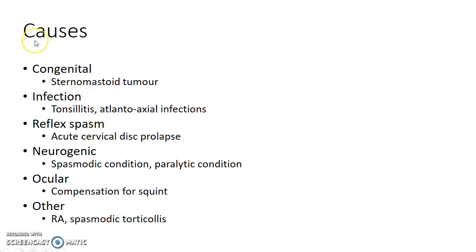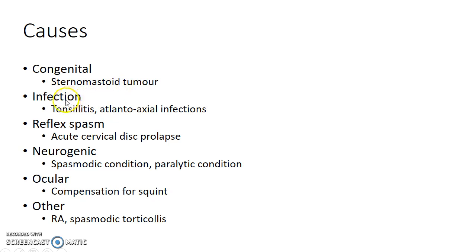Now let us see about the causes of Torticollis. Torticollis can be congenital, basically due to a sternocleidomastoid tumor. We will be seeing about congenital Torticollis in detail in the upcoming slides. Infections can also lead to Torticollis — examples include tonsillitis and atlanto-axial infections.